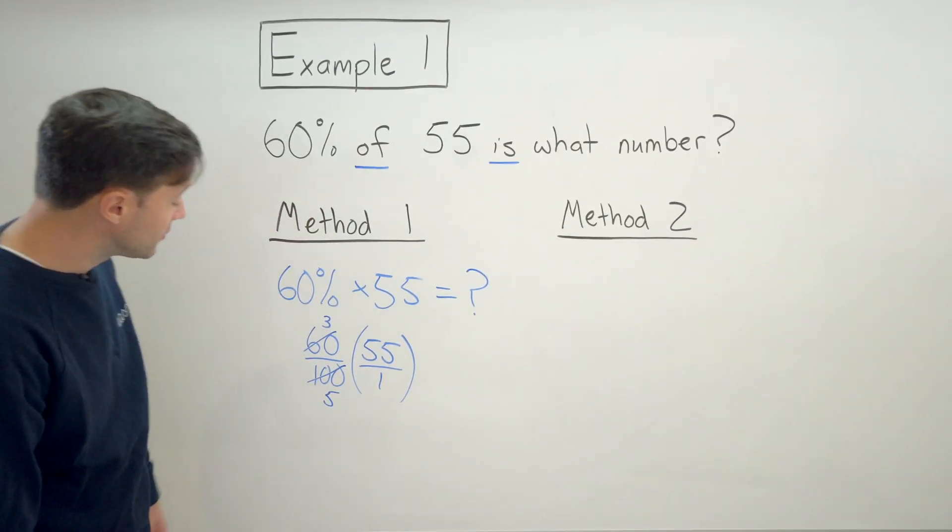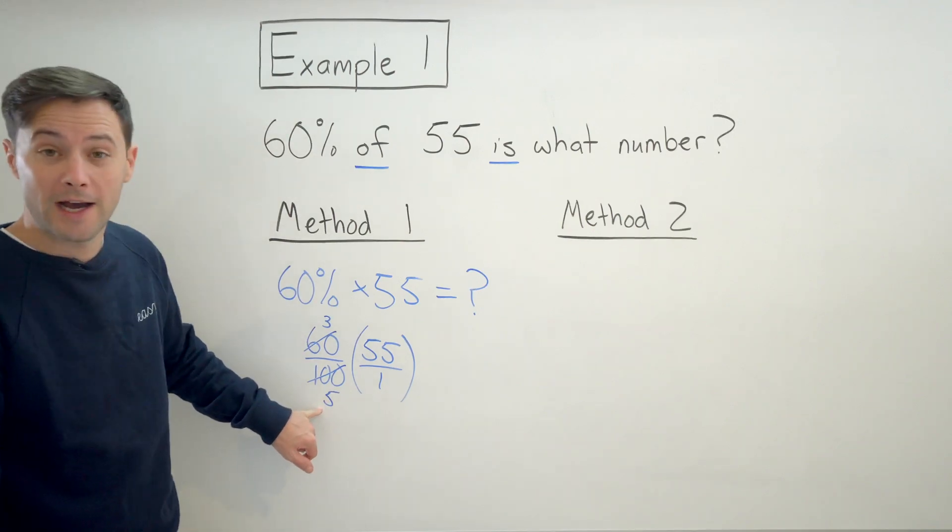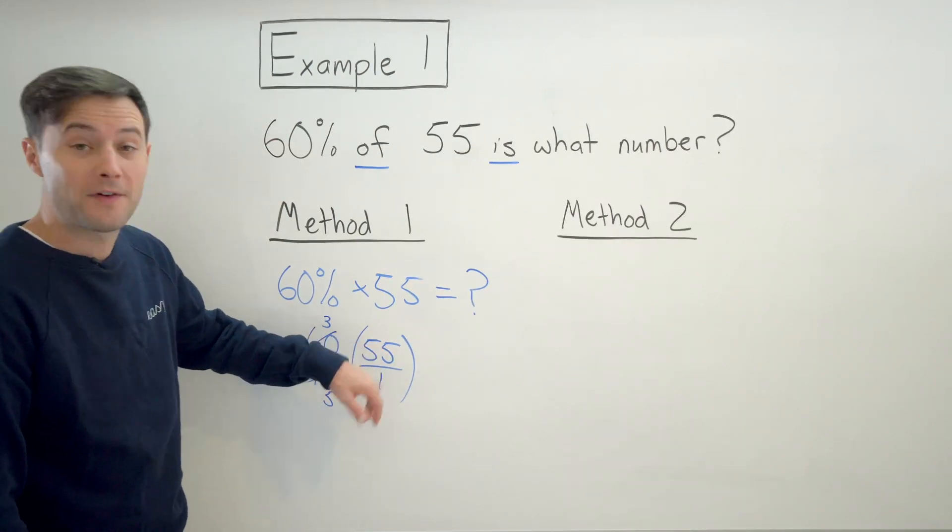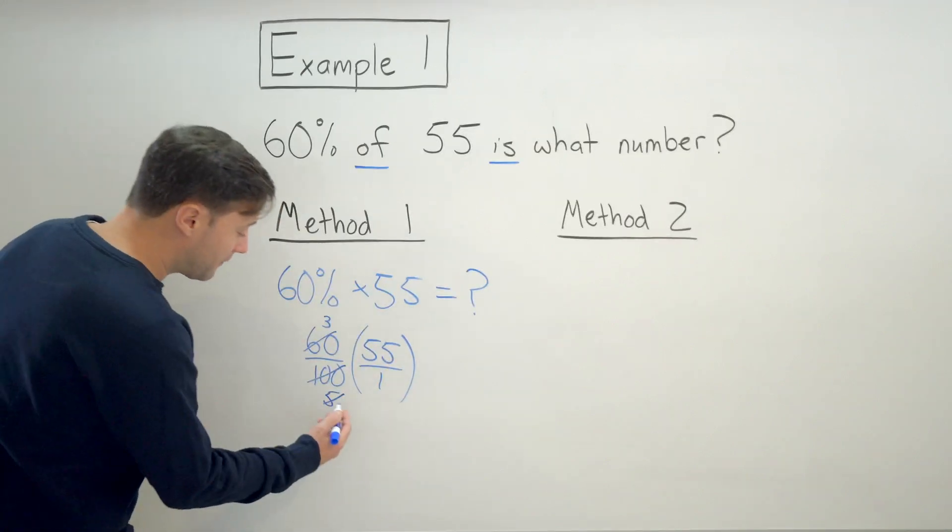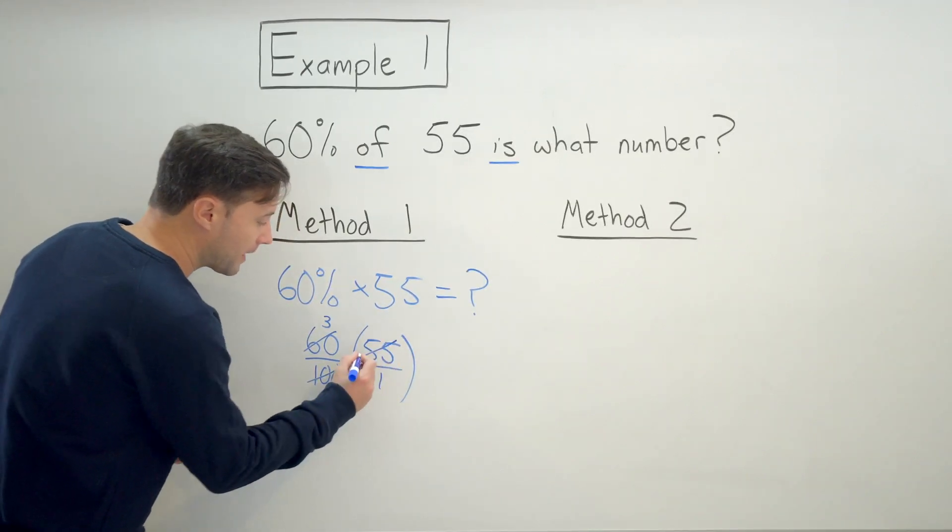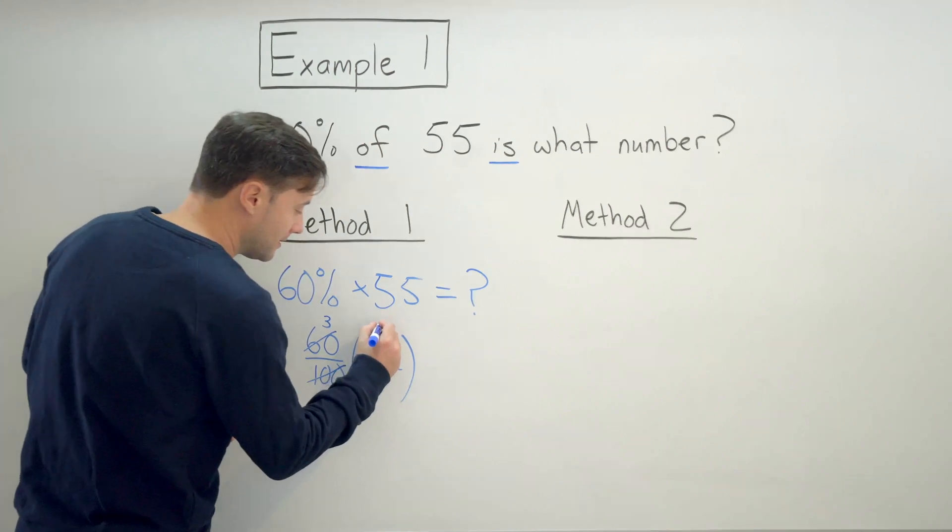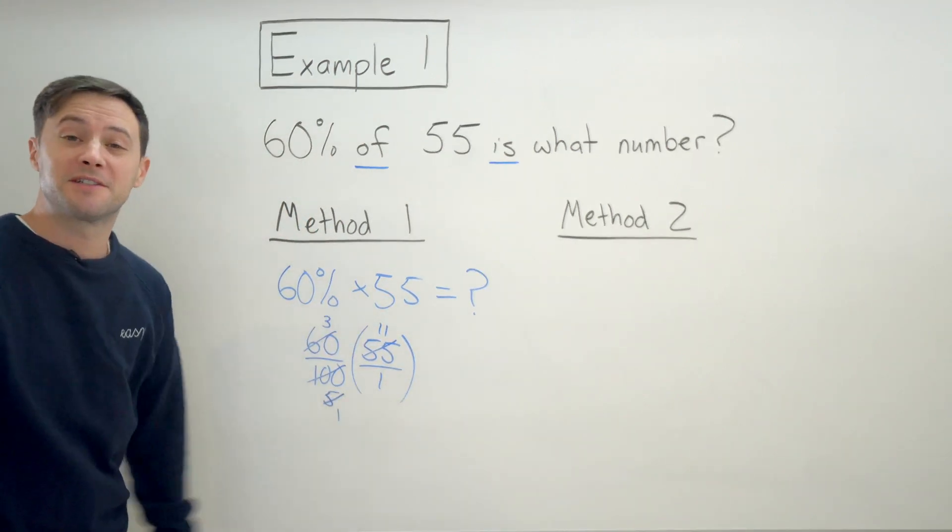And now I can also simplify this 5 in the denominator with this 55 in the numerator. So common factor would be 5. 5 divided by 5 is 1. 55 divided by 5 is 11. And look at how much simpler that became.